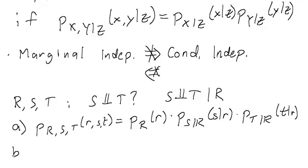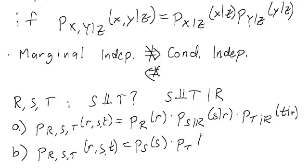And in part b, we'll have P_{R,S,T} equal to P_S times P_T times P_{R|S,T}.